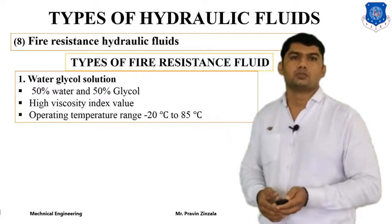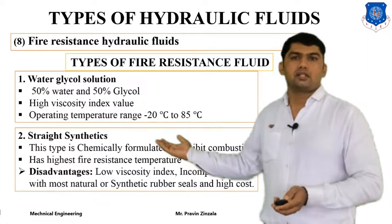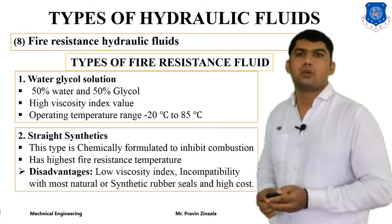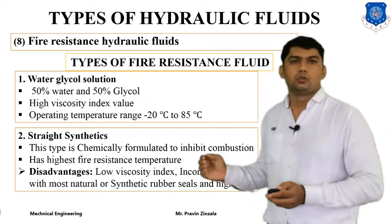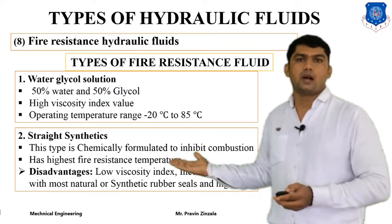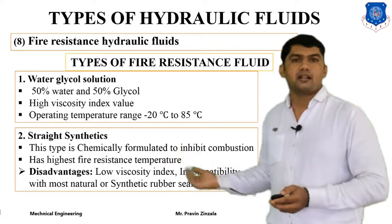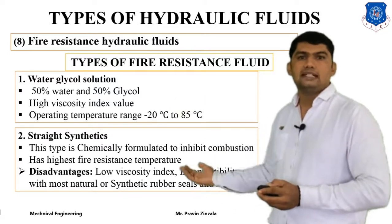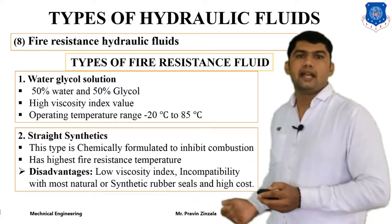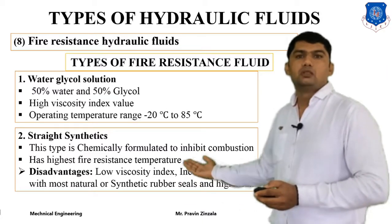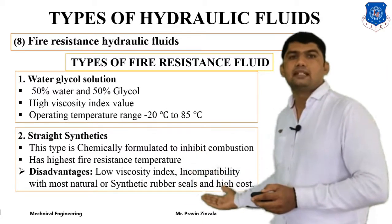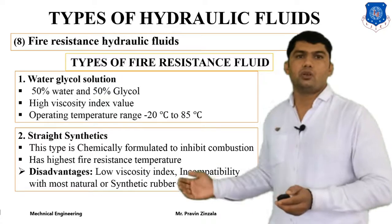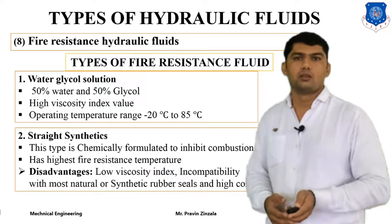The second type is straight synthetics, which is a chemically formulated inhibitor against combustion, also used for higher temperature operations of hydraulic systems. It has higher fire resistance temperature compared to water glycol solution. The disadvantages are low viscosity index, incompatibility with most natural or synthetic rubber seals, and high cost — so you cannot use rubber seals with this type of hydraulic fluid.